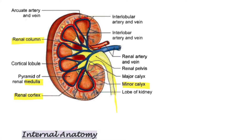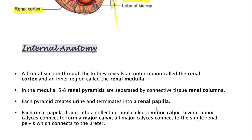A whopping 25% of the cardiac output goes to both kidneys. An average human body has anywhere between 4.5 to 5.5 liters of blood, so we're talking about 25% of that. The kidneys are very rich in blood supply and require a lot of blood. We've covered the renal cortex, medulla, pyramids, renal papilla, and the calyces.